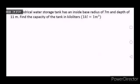In the second problem, a cylindrical water storage tank has an inside base radius of 7 meters and a depth of 11 meters. We just need to find the capacity of the tank in kiloliters. Whenever we talk of capacity, we're just referring to the volume. If you have the inner dimensions of this cylindrical tank, then the solution will be easy.